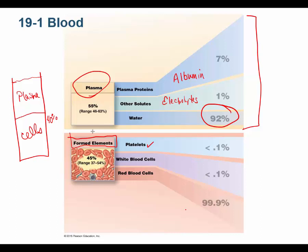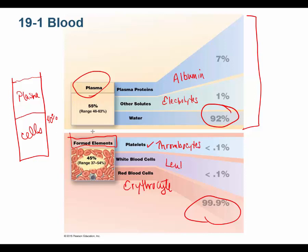The majority of formed elements are red blood cells, or erythrocytes. We also have white blood cells, known as leukocytes, and platelets, known as thrombocytes. You need to know these alternate terms — I'll use erythrocytes, leukocytes, and thrombocytes rather than reds, whites, and platelets.